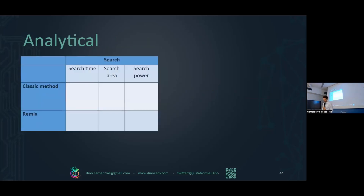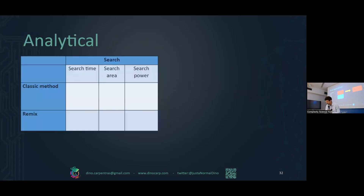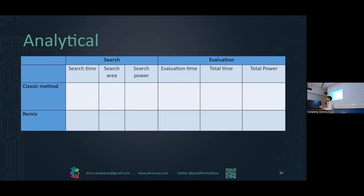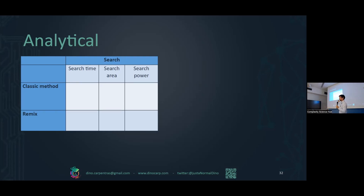I'm going to explain just the first two: the analytical and the KISS approach, as the other is too complex and we don't have time. In the analytical model, I'm oversimplifying the system and trying to see exactly how things can scale when we consider different types of interaction. In particular, I'm interested in how much time people spend looking for a solution or listening to others in the process — and what I'm defining as the search area, which is how much of the solution space they're able to search. The main idea is that the more they can search, the better the solution they can find.